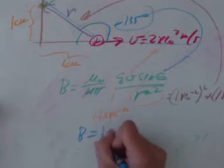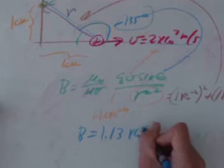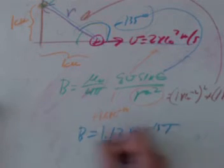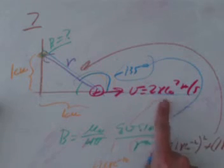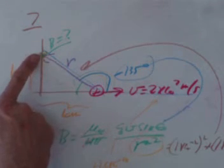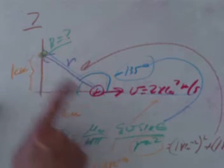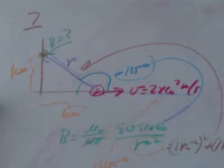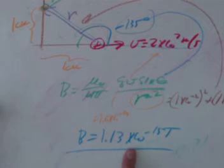And for this one here, I got something like 1.13 times 10 to the minus 15 Tesla. So what this tells me here about this, that if you have a proton going on the x-axis at 2 times 10 to the seventh meter per second, you're standing at this point here and want to know what magnetic field is created due to this proton, you will get 1.13 times 10 to the minus 15 Tesla for that field.